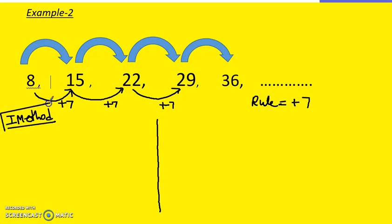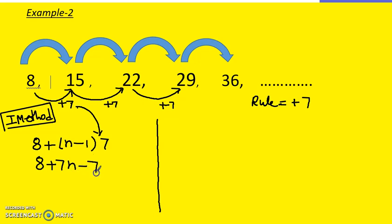Using first method: write down the first term, 8, plus (n minus 1) times the difference, which is 7. That gives 8 plus 7n minus 7, so the answer is 7n plus 1 (since 8 minus 7 is 1).